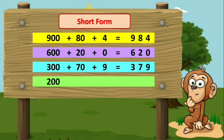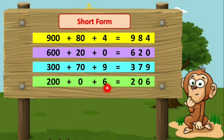Now let's take one more example: 200 + 0 + 6. Here we have two hundred, so we will write two. Then we have zero tens, so we will write zero. And we have six ones, so we will write six after zero. The short form of 200 + 0 + 6 is two hundred and six (206).